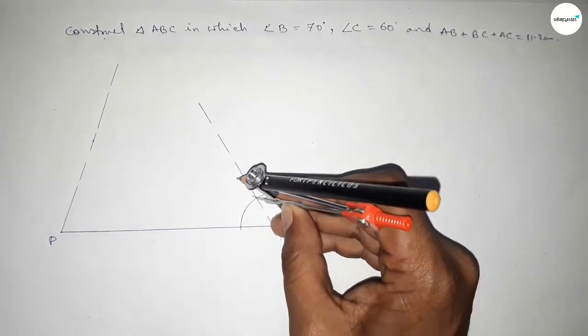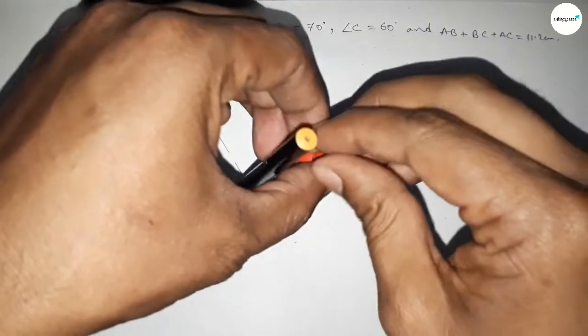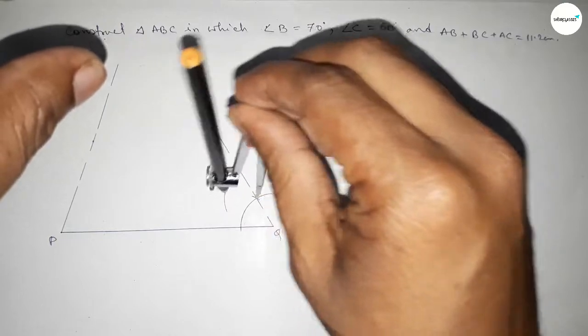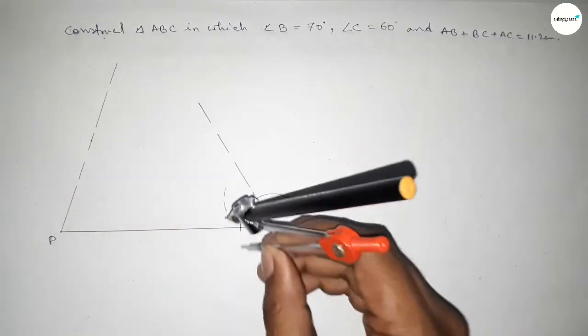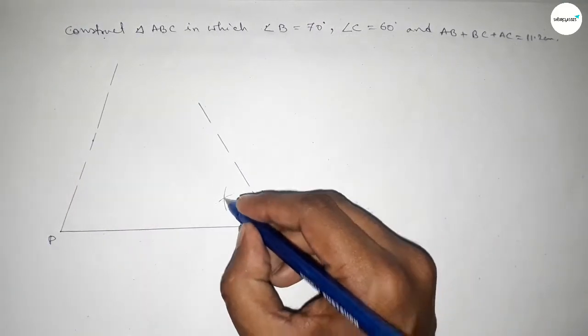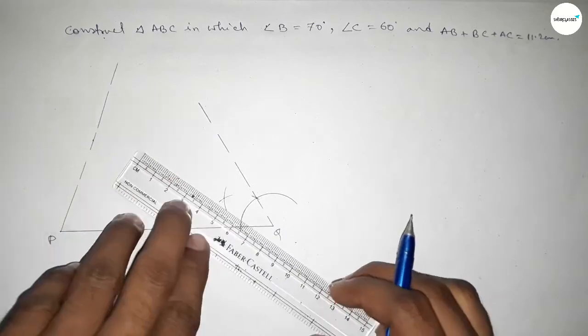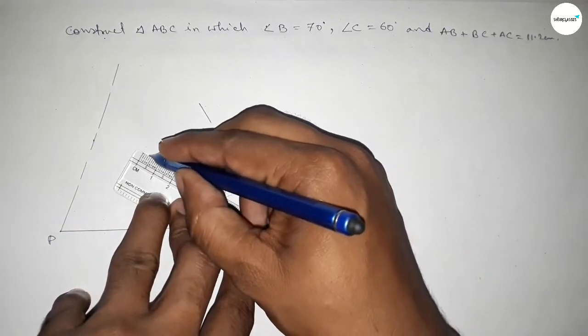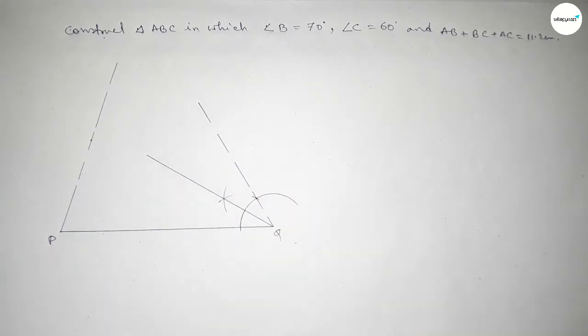So first now we have to bisect this angle. Putting the compass here and taking any length and drawing an arc by this way. With the same length and putting the compass here and cutting here, so both the curves intersect at a point. Now joining this bisector.